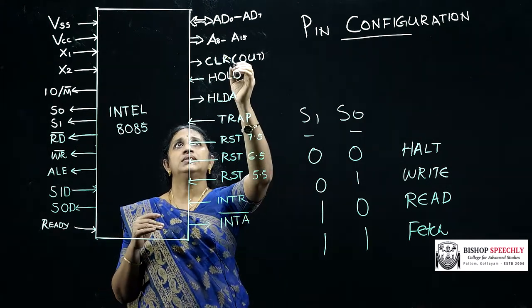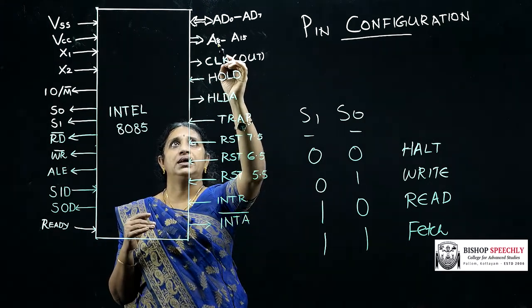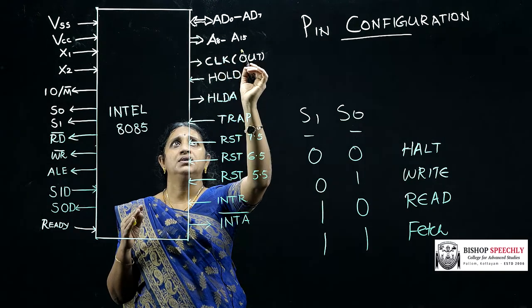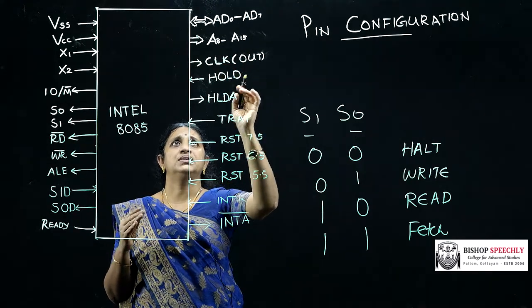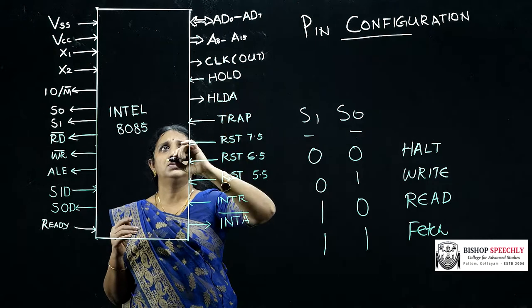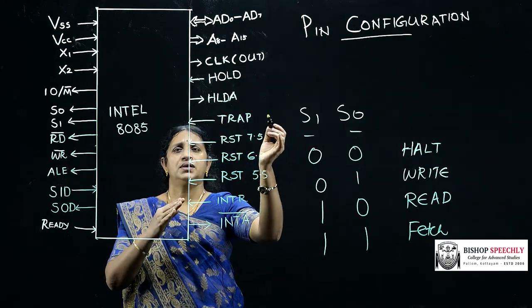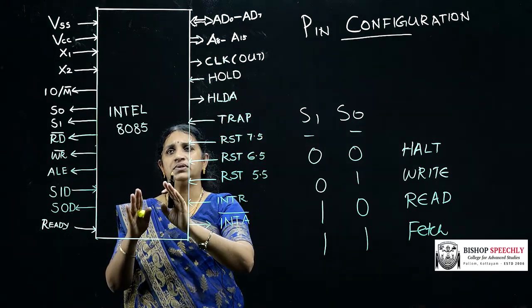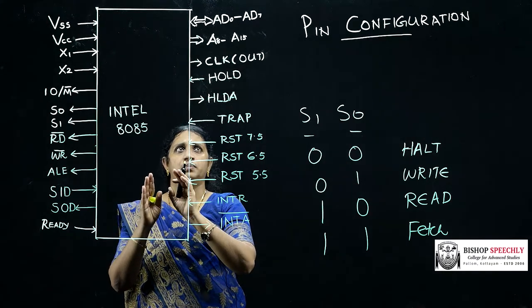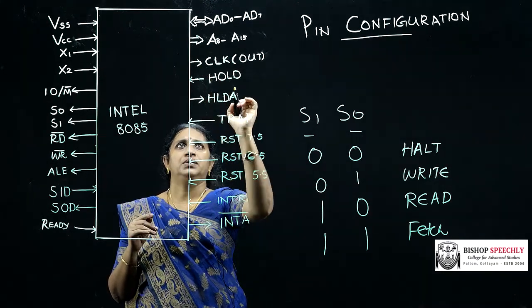The next bus is address bus. These are A8 to A15, that are eight pins. The next one is clock out. If another device has to function in accordance with the clock signal of microprocessor, we could use this pin.